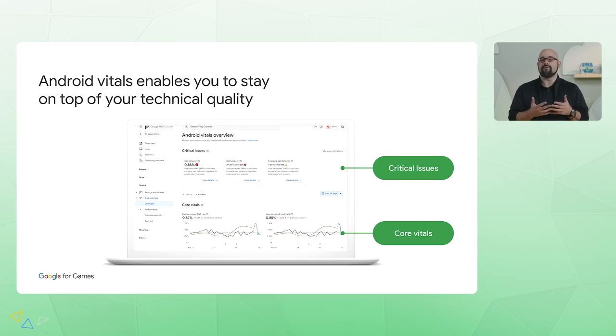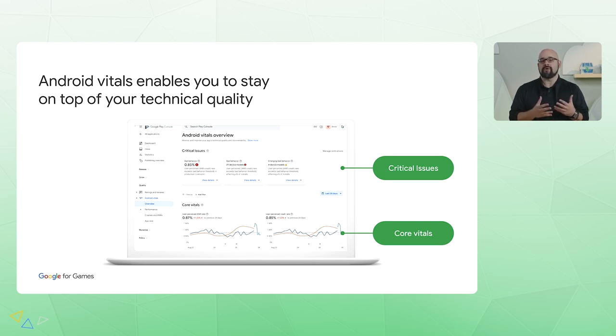Let's start with quality. App quality is the foundation of everything that we do at Android and Google Play. Android users expect a great experience from the apps and games they download. We've recently launched a number of new features in Android Vitals to make it easier to monitor and act on any issues. First, core vital metrics have been updated with user-perceived crash rates and ANR rates, and the ability to view the quality bar per phone model.